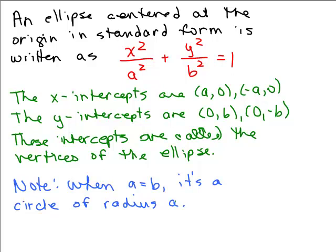We're only talking about an ellipse centered at the origin right now, and we've only done one in standard form. There's a lot more to ellipses than this — this is just the basics of understanding what the equation looks like and how to graph it, finding the intercepts which are the vertices in this case. We'll do a few more problems, including some not already in standard form, in the next videos.